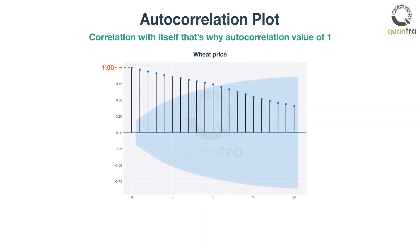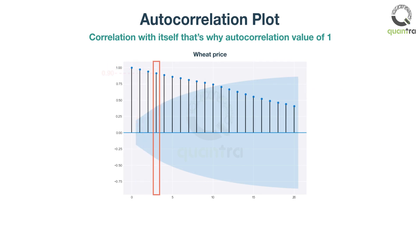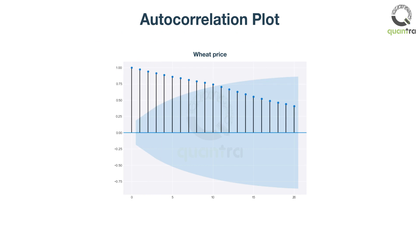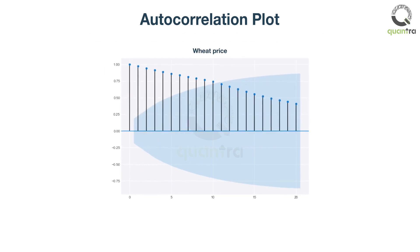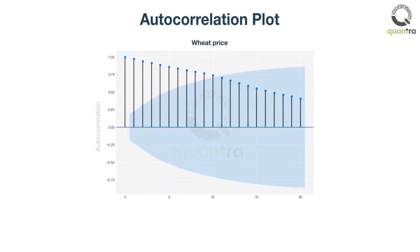Similarly, you can find autocorrelation with one-month lagged values, three-months lagged values, and so on, by plotting the graph. The autocorrelation with two-months lagged value is 0.93. The plot is called the autocorrelation plot. The Y-axis has the autocorrelation value, which ranges between minus one and plus one, and the X-axis is the lagged terms.